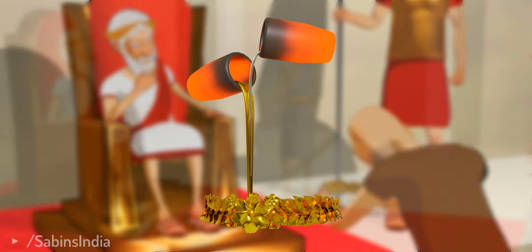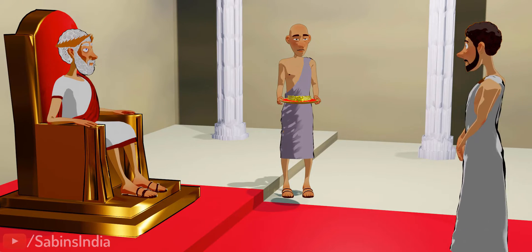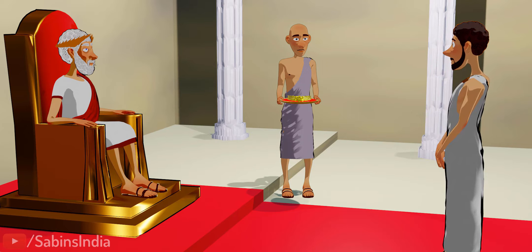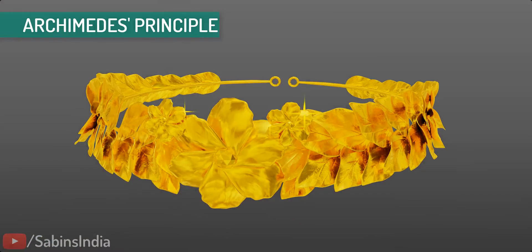The king gave the task of checking the quality of gold to his most intelligent scientist, 22-year-old Archimedes. Archimedes found a solution to this problem by discovering one of the most important principles of physics, what came to be known as the Archimedes Principle.